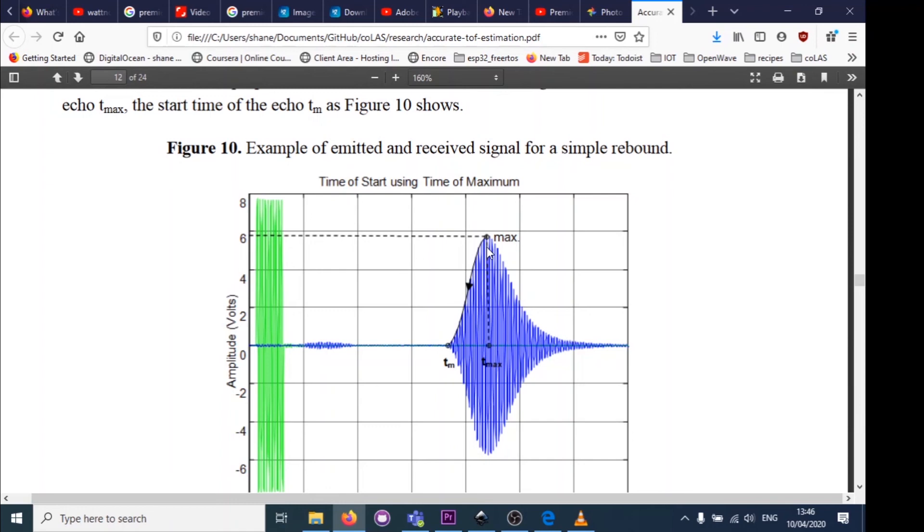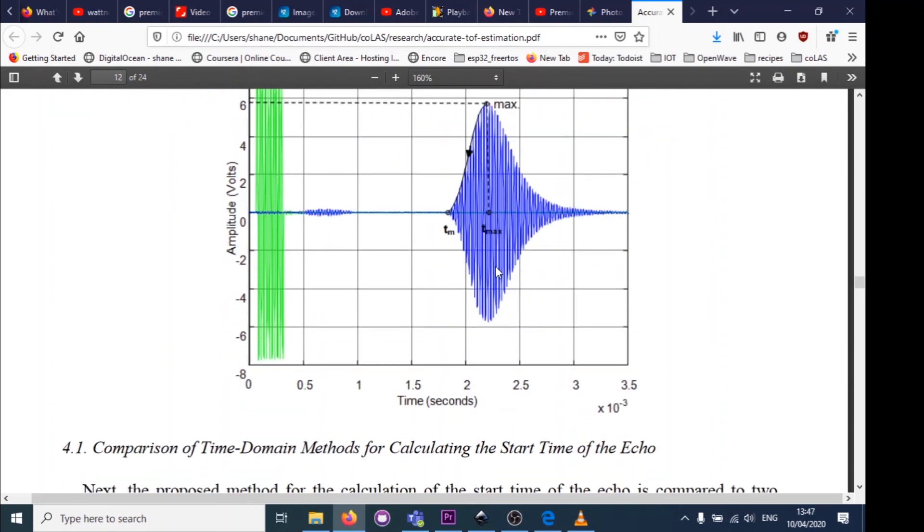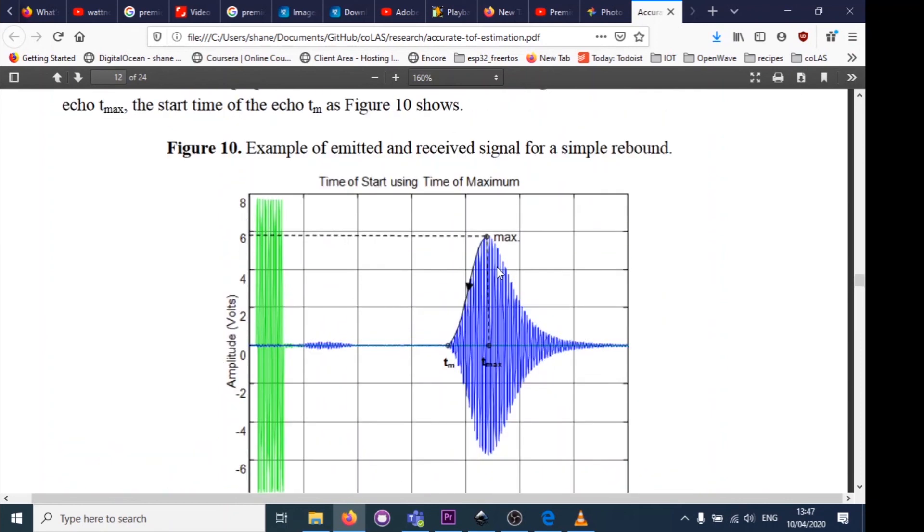You measure when the maximum of the receive signal occurs, and then from there, because you've got the equation of the envelope, you can actually work backwards to figure out when the signal must have arrived. Using this method, you can get a much more accurate measurement compared to just threshold detection.